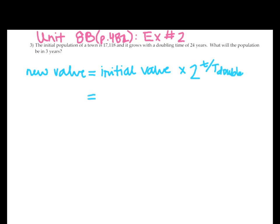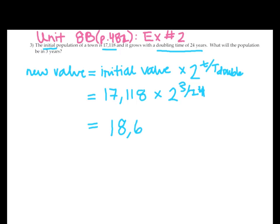We have the initial population at 17,118 — that's your initial value — multiplied by 2. The time frame we want is three years, so t equals 3, and the doubling time is 24 years. So we have 2 to the power of 3 over 24. Plugging this into the calculator, we get a population of 18,667. That is your final answer for problem number three.